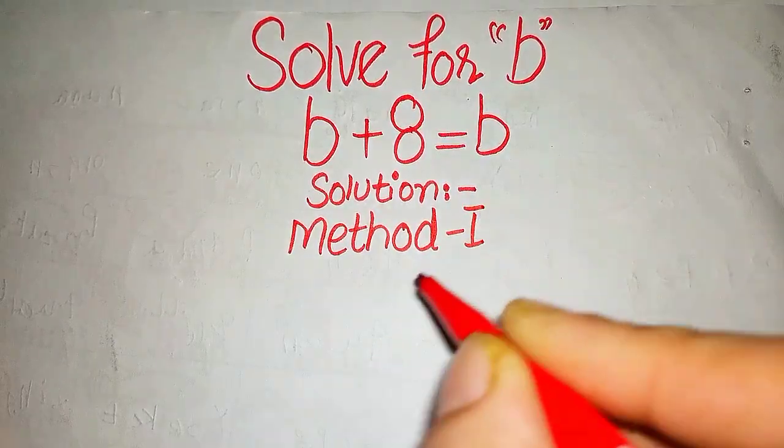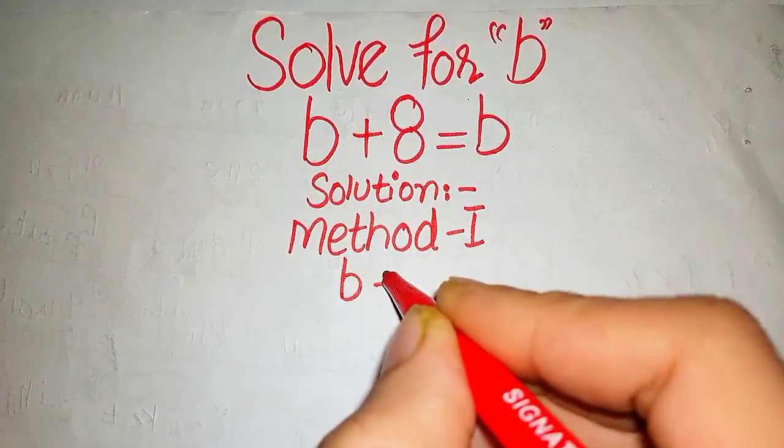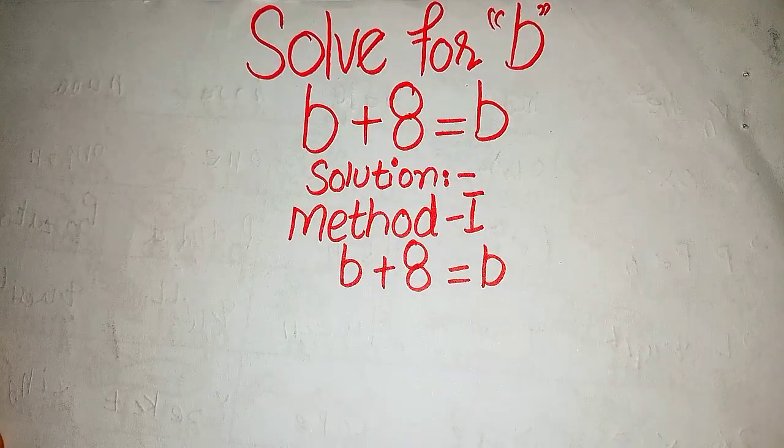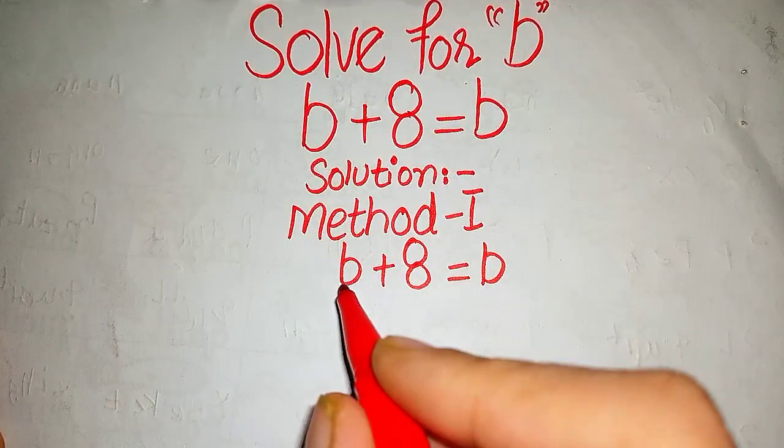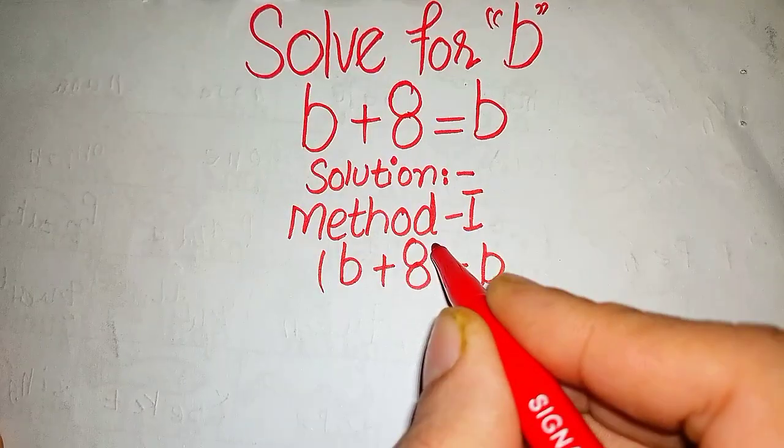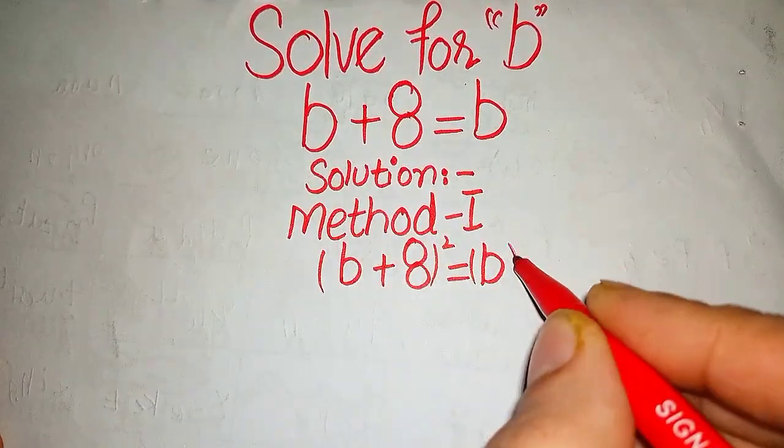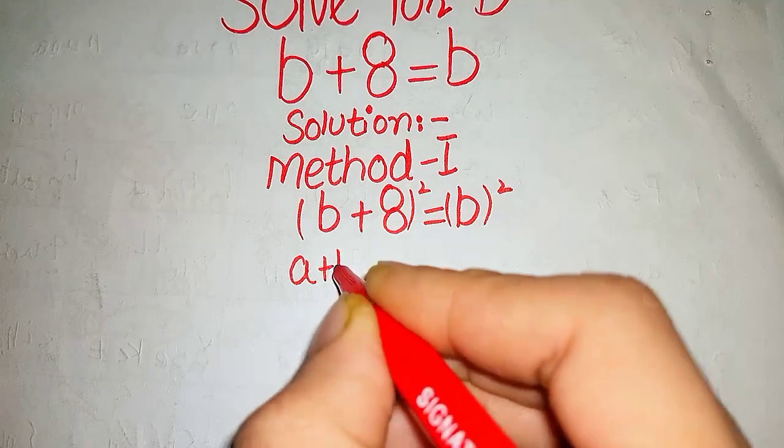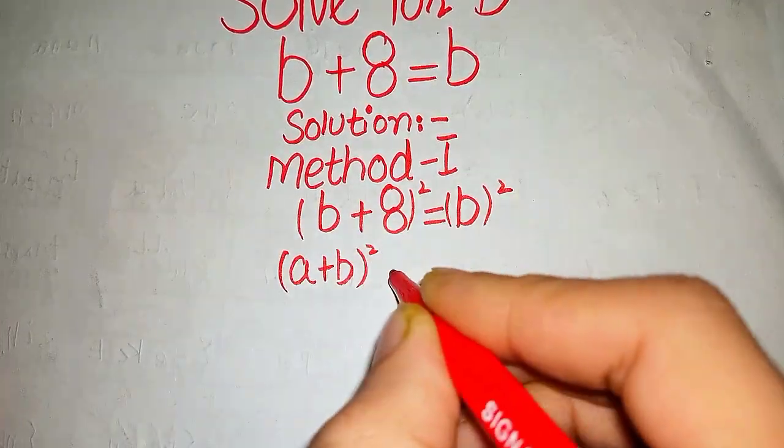Method one: b plus 8 equals to b. First of all, we take square on both sides of the equation such as b plus 8 whole square equals to b square. And we know that a plus b whole square equals to a square plus 2ab plus b square.